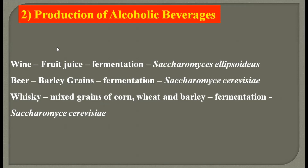The next application is the production of alcoholic beverages, which are produced using the fermentation process. First we have wine — for production of wine we use different fruit juices and by the process of fermentation we create alcohol. The organism responsible for fermentation is Saccharomyces ellipsoideus, a fungus which brings about fermentation resulting in the formation of wine. Secondly we have beer, in which we use barley grains, and the main organism is Saccharomyces cerevisiae, a fungus commonly known as yeast.